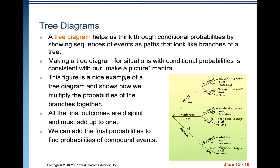Tree diagrams are really helpful when we have conditional probabilities in a sequence of events. Making a tree diagram for situations with conditional probabilities is consistent with our 'make a picture' mantra. This figure is a nice example showing how the probabilities of the branches work together. When you get out to the final probabilities, they should add up to 1 because every possible outcome should be represented.